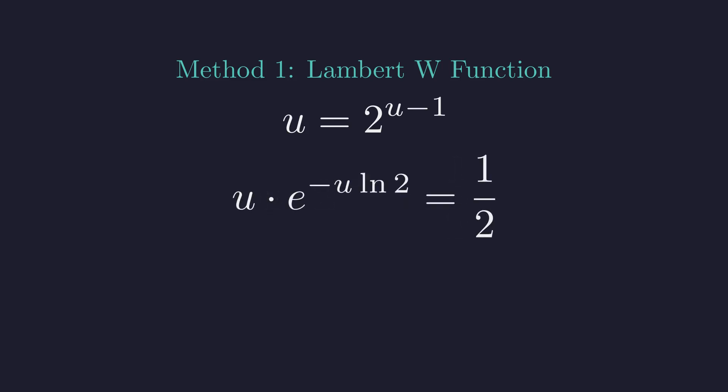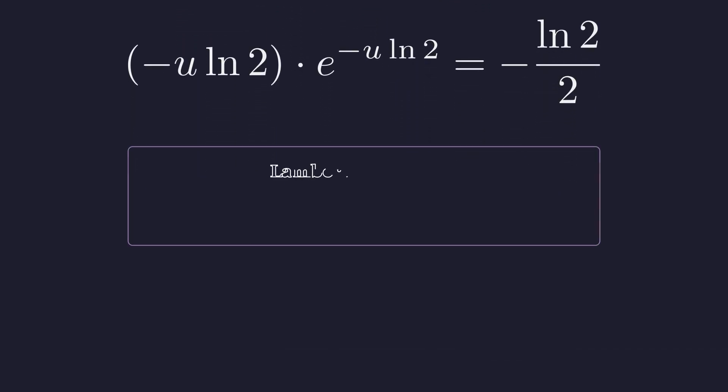Multiplying by negative natural log of 2 converts this to the standard Lambert W function form. The Lambert W function is the inverse of x times e to the power of x. It's the key tool for solving equations where the unknown appears in both the base and the exponent.